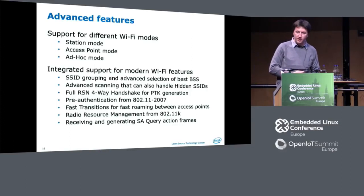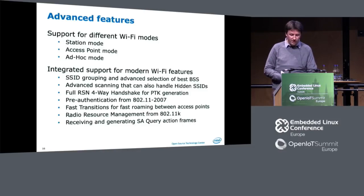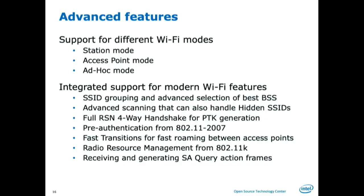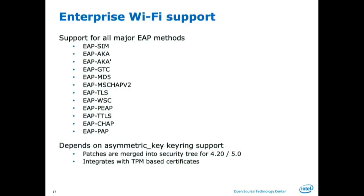What we have right now is station mode, access point mode, and ad hoc mode. We put all SSID grouping one level down so NetworkManager doesn't have to do it anymore. We handle hidden SSIDs, the full four-way handshake properly, pre-authentication if available, and fast transitioning. We ask the access point if it has neighbor access points and just switch — it's so fast, it's unbelievable. We manage radio resources properly and authenticate deauthentication frames to prevent forced disconnects. The enterprise support is growing — we have most EAP methods, including EAP-TLS and EAP-PEAP, all with end-to-end and unit tests.